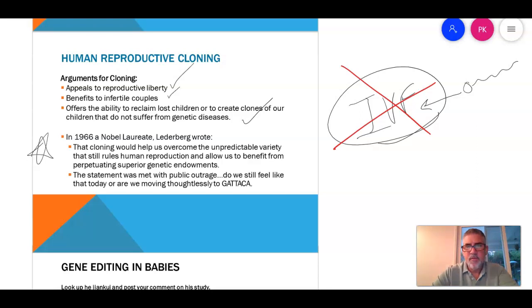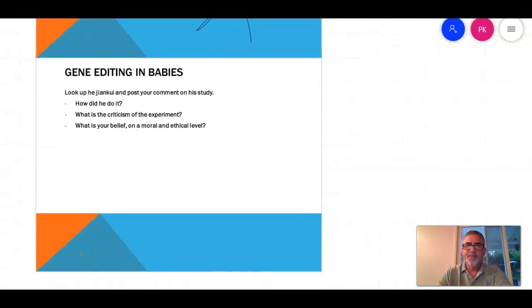So this is an important statement. Cloning would help us overcome the unpredictable variety that still rules human reproduction and allow us to benefit from perpetuating superior genetic endowments. So this guy's arguing for Gattaca. So the wealthy would be able to pay for better children, and they would be genetically superior. And they would probably be viewed as genetically superior. So if you were applying for a job, you'd be able to state that. So we're going to look up this guy. So that's your assignment today. We're going to look up that guy, Januki, and we're going to post our comments in a study. How did he do it? What's the criticism? And what's your belief on a moral, ethical level? All right, so that was it for today, and I will talk to you soon.